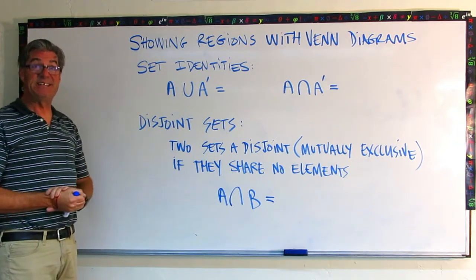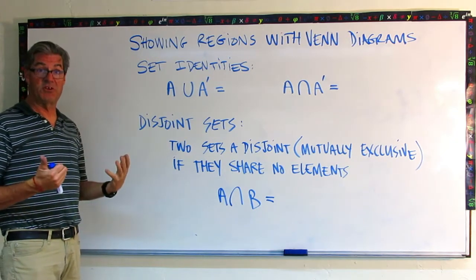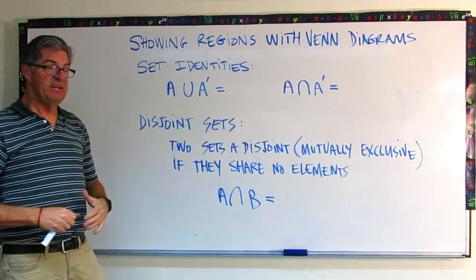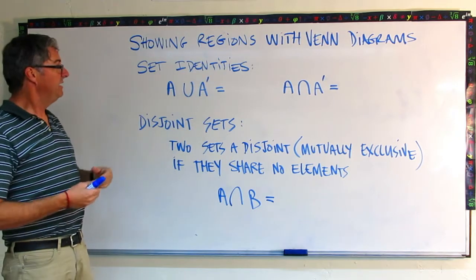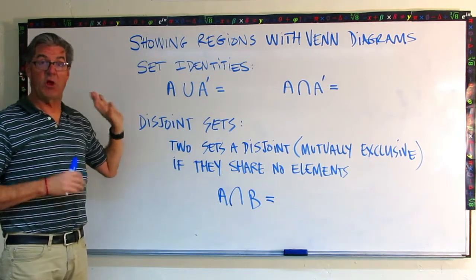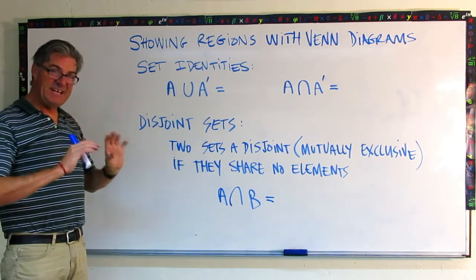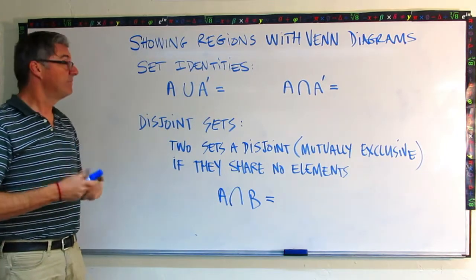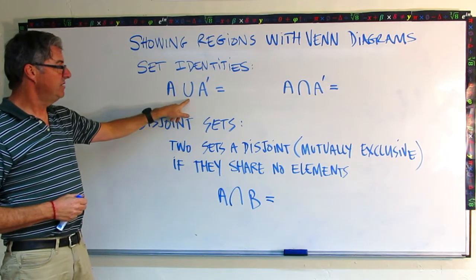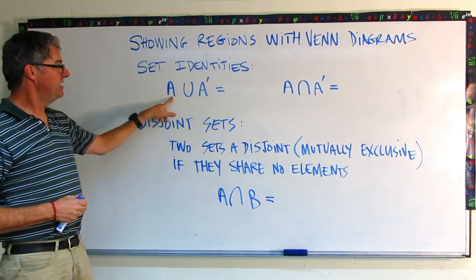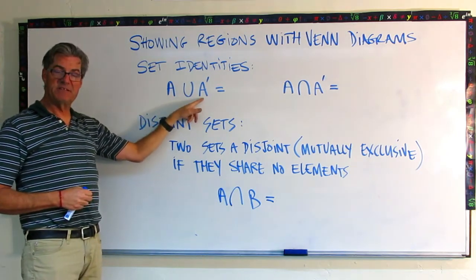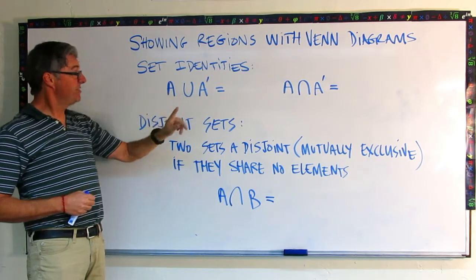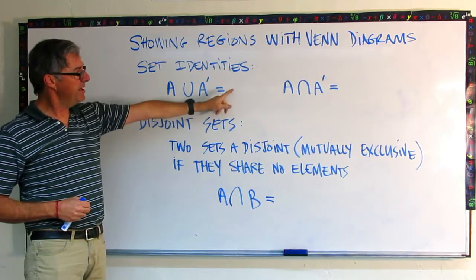There's these two set identities that I want to share with you. And whenever you see an identity in mathematics, this is something that always holds true. And in this case, these identities will always hold true for any sets within a universal set. So let's think about this first one: the union of set A and its complement.